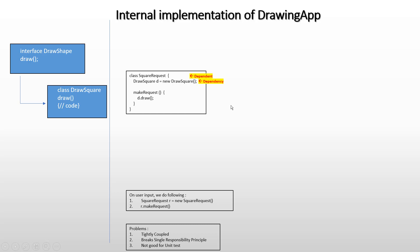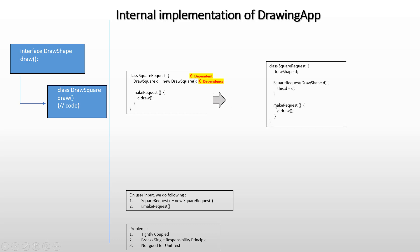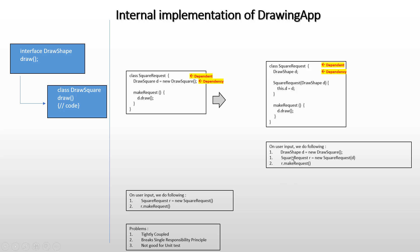We can rewrite SquareRequest like this: we can have DrawShape, which is an interface, instead of having DrawSquare which is a concrete implementation directly. DrawShape shouldn't be instantiated inside this class — we can accept it as a dependency in the constructor, and the makeRequest method remains the same as earlier. The end-to-end flow looks like this: when a user clicks the draw square button, we instantiate DrawShape to have DrawSquare, then instantiate SquareRequest supplying DrawSquare, and then call makeRequest.